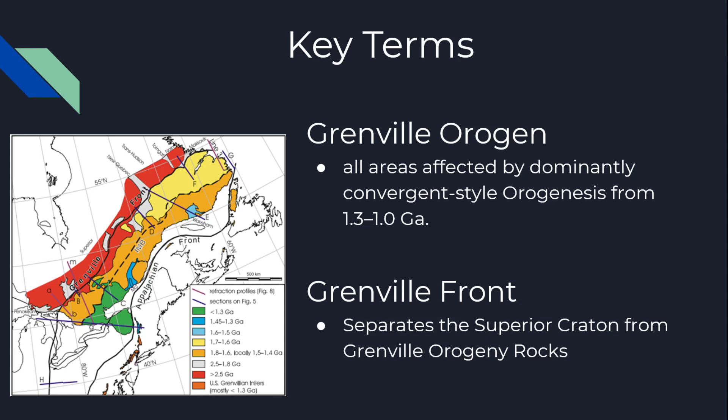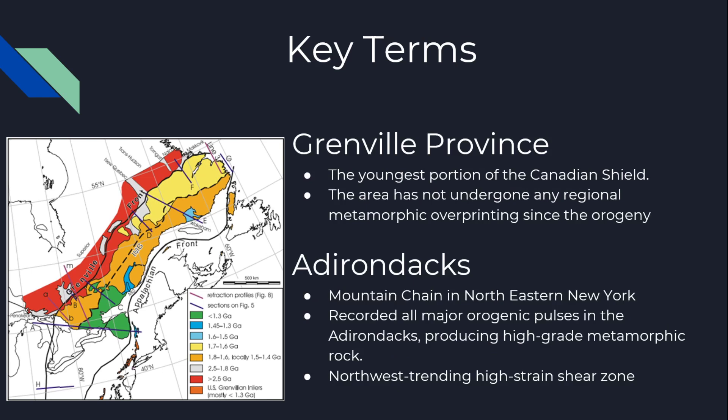Now for key terms. The Grenville Orogeny refers to all of the area affected by the orogenesis that happened primarily from 1.3 to 1.0 billion years ago. The Grenville Front is the boundary between the Superior Craton on the west and the Grenville rocks on the east — it is the colliding front of the orogenic event together with the older Superior Craton.